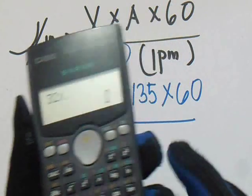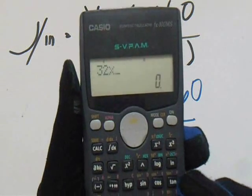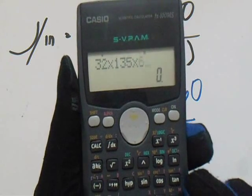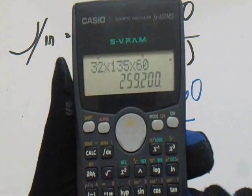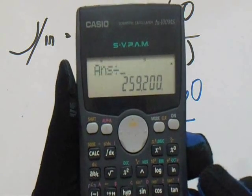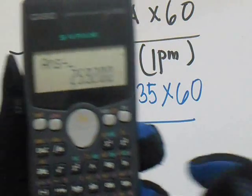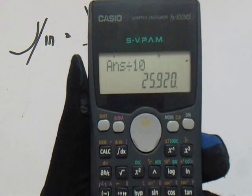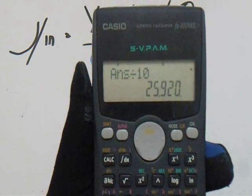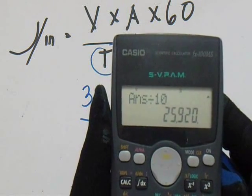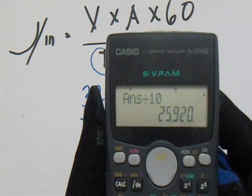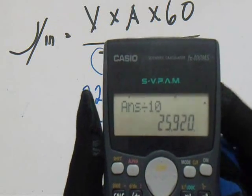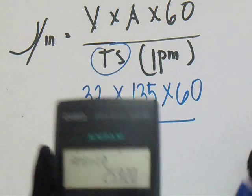So let's compute it for this example — the long arc. Our Volts is 32, multiply it by our Ampere which is 135, multiply it by 60, then divide it by our inch per minute which is 10. So this is our answer for this long arc length: 25,920.